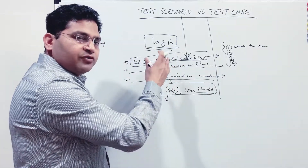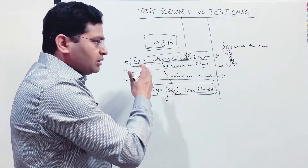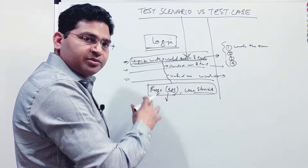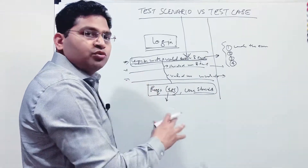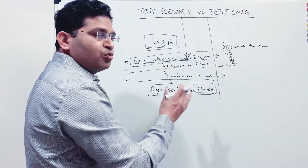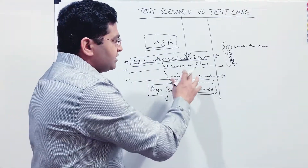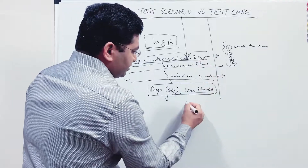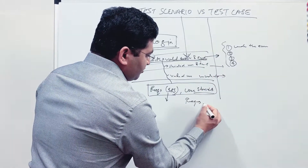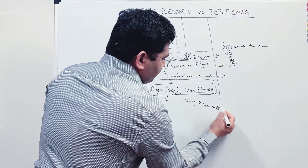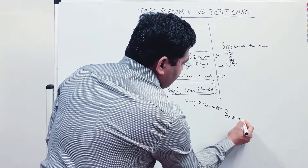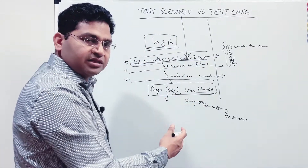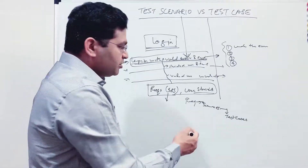From the requirements and user stories, you come up with test scenarios — high-level, one-liner descriptions of what you are going to test in a particular functionality. Test cases are a more detailed description of those scenarios; test cases are derived from the scenarios. So the hierarchy is: requirement → scenarios → test cases. From requirements you come up with scenarios, and from scenarios you write and elaborate the test cases.